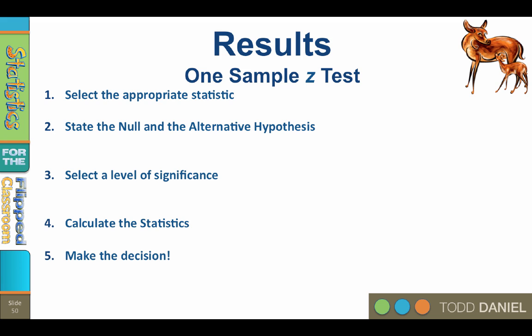Step 1: Select the appropriate statistic. We used the one-sample z-test to compare the sample and population mean when the population standard deviation was known. Step 2: State the null and alternative hypotheses. H sub 0: mu equals 36.9. That's the null.